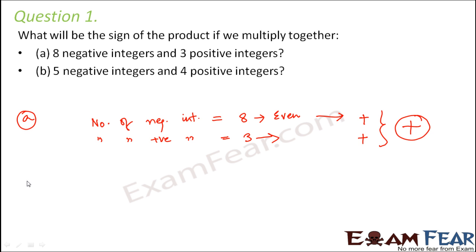Let us look at the next one. You have number of negative integers 5. So you have number of negative integers 5. 5 is even or odd? 5 is odd. Therefore the product of 5 negative integers would be negative.